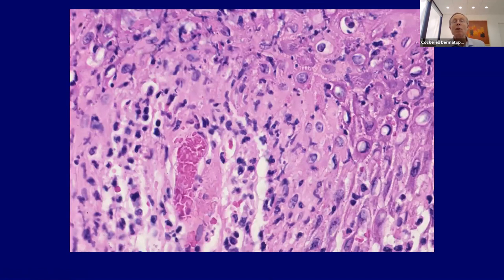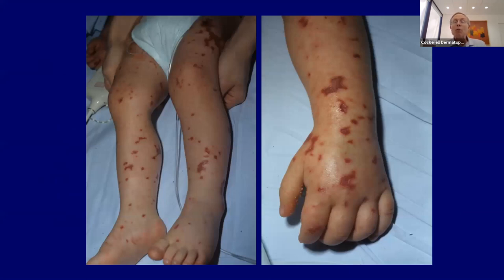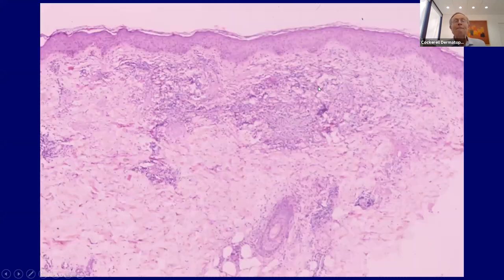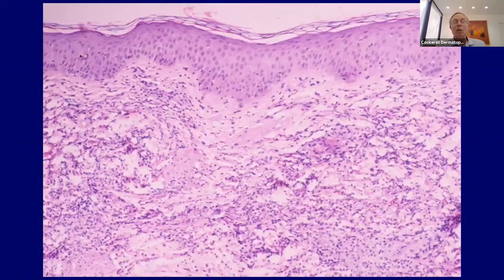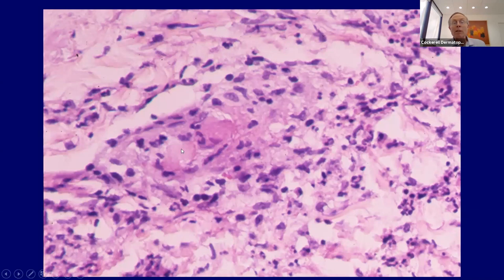Meningococcus has two forms: the acute fulminant form, often fatal, and the more chronic form — the type where kids go to summer camp, carry it, spread it in an epidemic, with some coming down with the acute form. Just like gonococcemia, you get lots of vascular thrombosis with pretty much intact neutrophils. Here's a child with acute meningococcemia showing the infarctive area and a stellate ulcer due to underlying thrombosis. The pathology looks similar to gonococcemia: intact polys, thrombosis, relatively limited leukocyte eclasia.